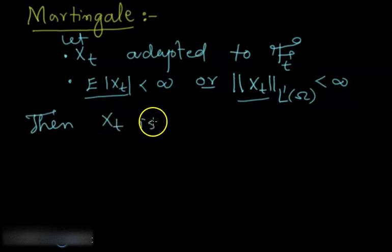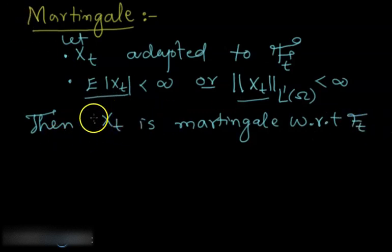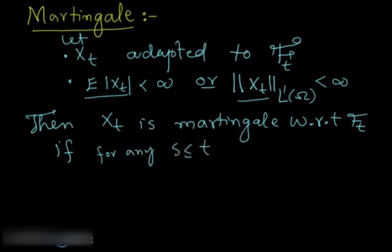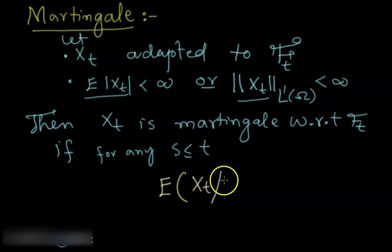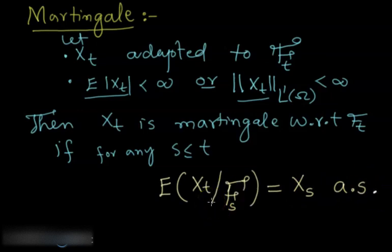Then X(t) is a martingale with respect to filtration F_t if, for any s less than or equal to t, we have this expression hold: the expectation of X(t) given F_s is equal to X(s) almost surely.